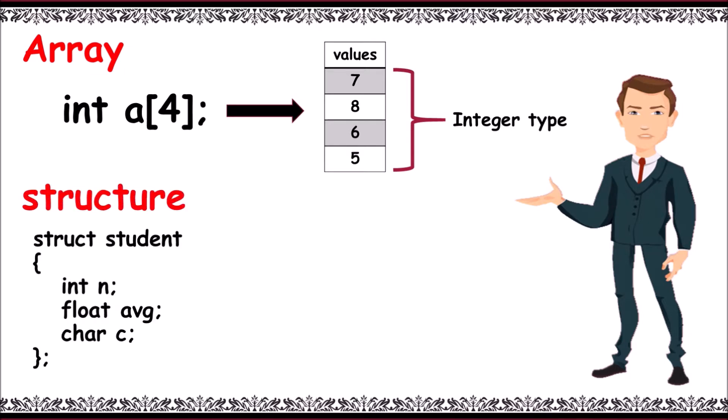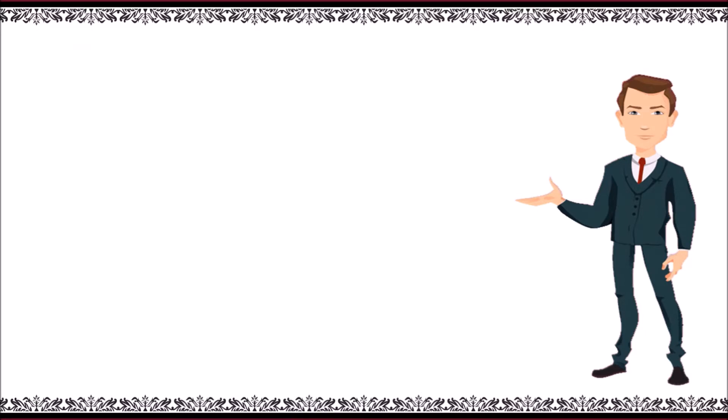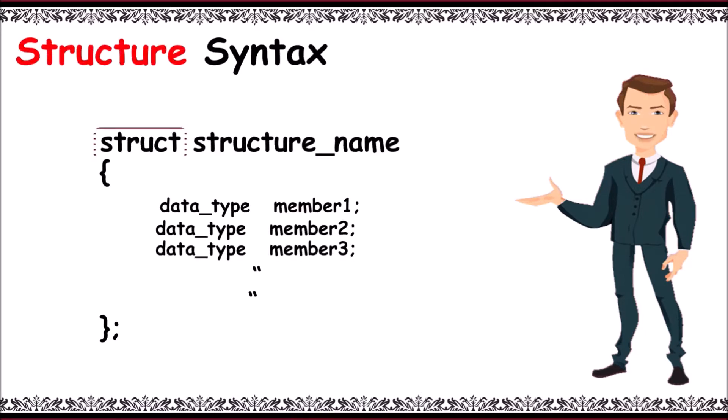This is a structure in C named student, holding multiple members of different data types. It holds values like 7 of int, 89.23 of float, and X of char - multiple types. The structure syntax contains the keyword struct.